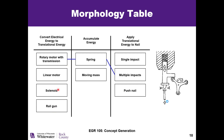We use this table and pick different methods from each column to generate many different concepts. We can use the same concept of a spring or moving mass many times with different types of motor or energy translation, then apply it in different ways. This is a more advanced way of generating concepts, and it will be the last one we'll use. Now that we've generated all these concepts, we need to use concept selection to narrow down which concepts we really want to work on.